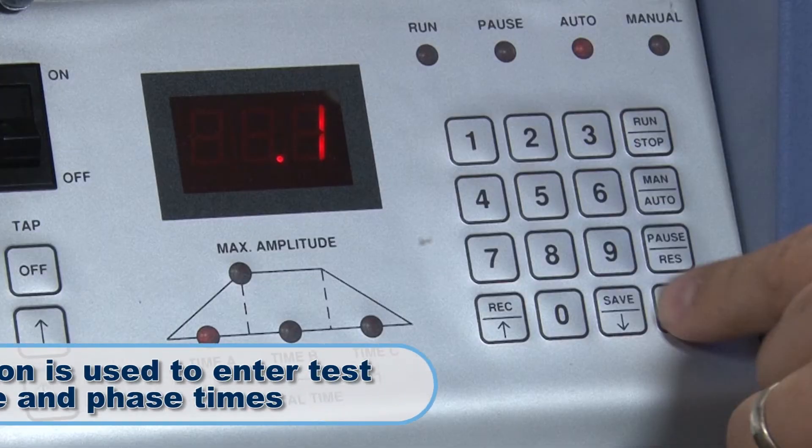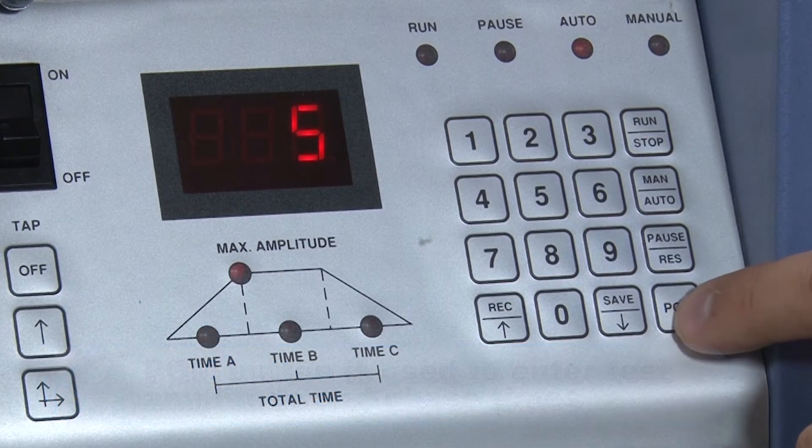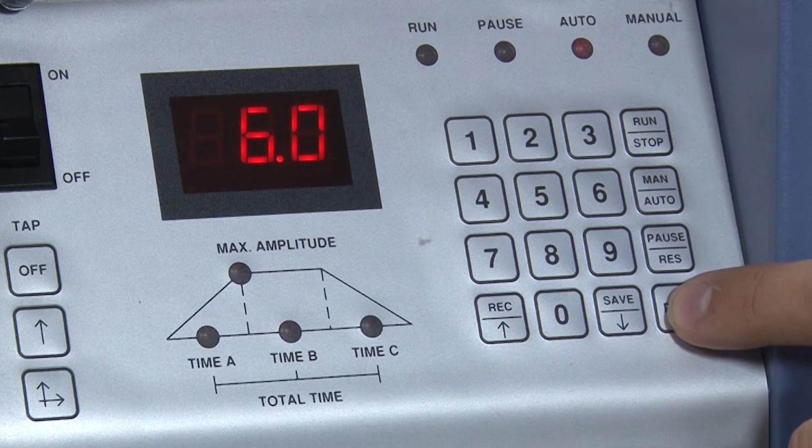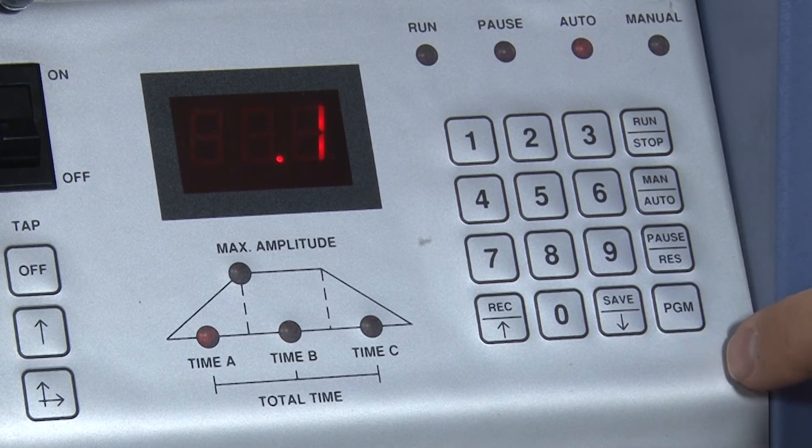The Program button is used to enter test amplitude and phase times. The button is pressed to accept the displayed value and advance to the next entry. This function is also used to review previously saved test parameters.